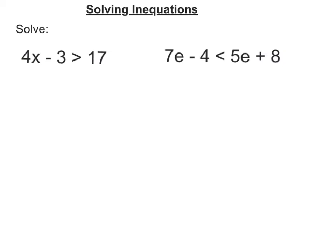So let's look at this first one. 4x minus 3 is greater than 17. So first let's get my number terms onto one side by adding 3 to both sides. Remember we do the opposite.